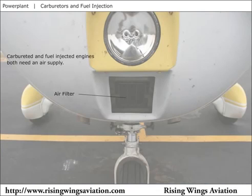Both carburetor and fuel injected engines are susceptible to impact icing, which results when the airplane flies through visible moisture that forms ice on the engine's air intake or air filter. This impact ice blocks the flow of air into the engine. To counteract impact icing, many engines include a manual or automatic valve which provides an alternate intake air supply.